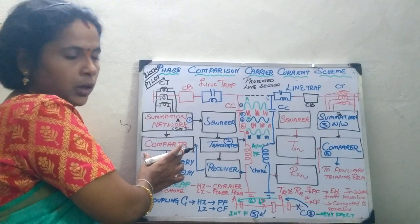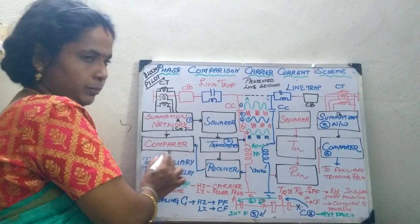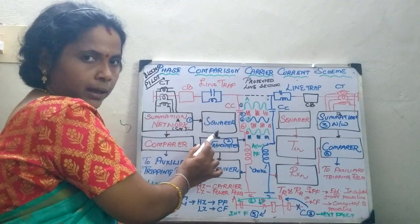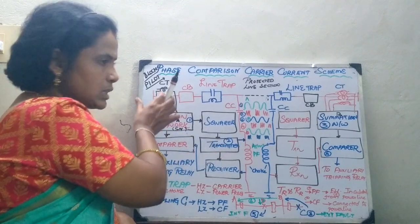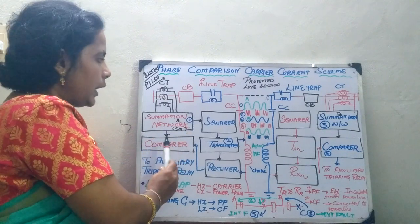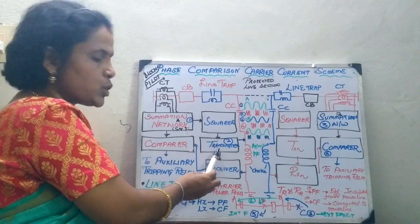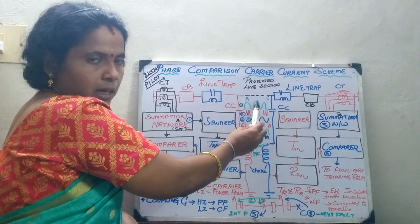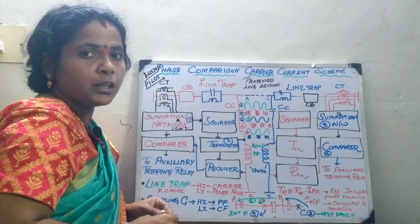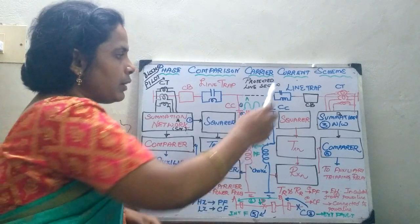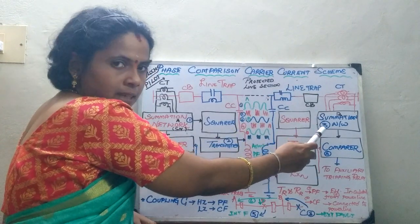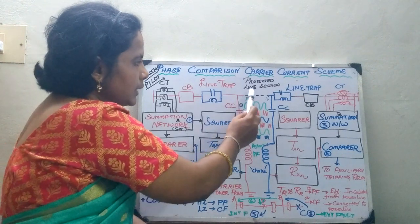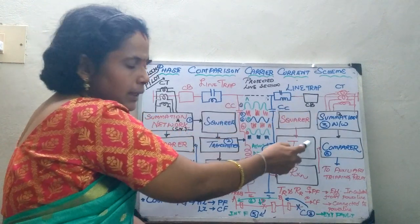From the summation network, the signal goes to the squarer, and whatever signal is received at one end goes to the squarer from which it is transmitted via the coupling capacitor to the next section. Whenever it is transmitted and the data is analyzed, the signals are compared from the other section.